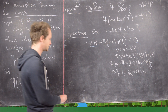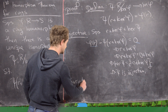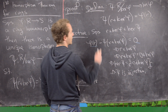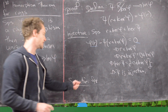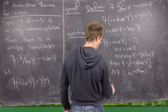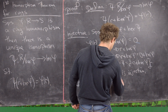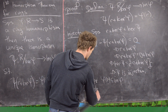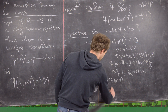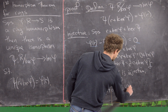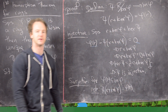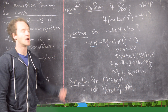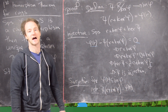Now let's do surjectivity — that's actually pretty easy. Suppose we have an element from the image. Everything in the image is of the form phi of R — that's just the definition of the image. Notice that psi of R plus kernel of phi equals phi of R, so we've found a pre-image for that element. This map is actually built to be onto, which is why there's really no work here.